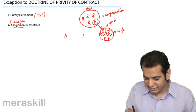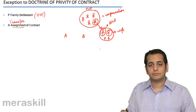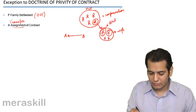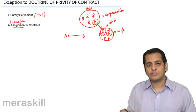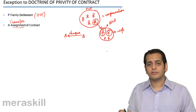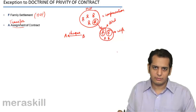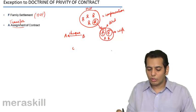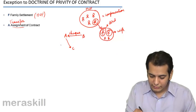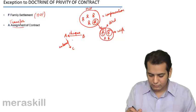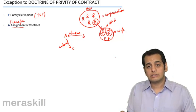Now I give you an example. There was a person A who was to receive money from B. So B wrote a check to A and A got the check. However, A had to pay money to C, so what he did was he endorsed the check to C.